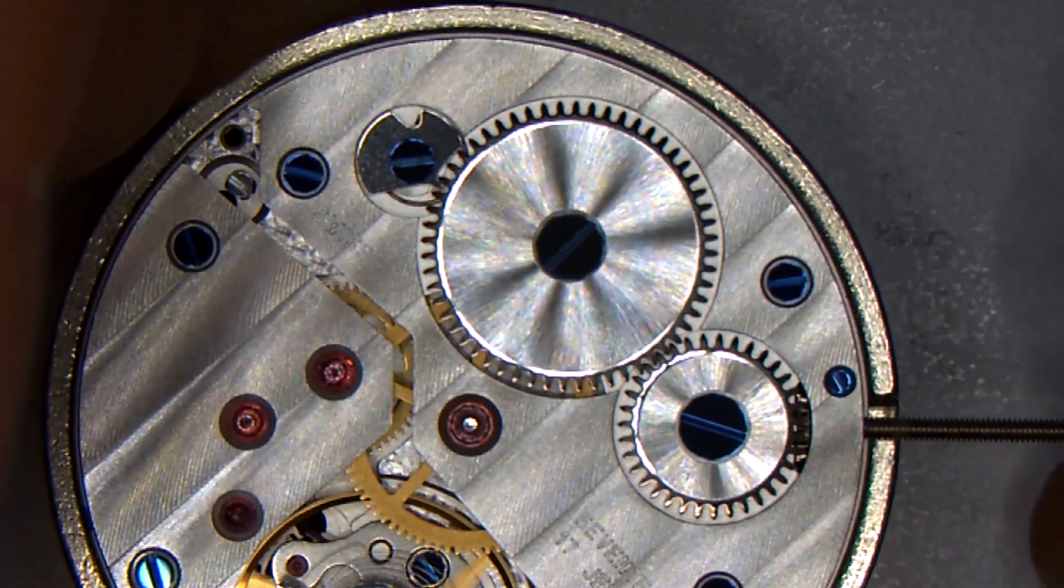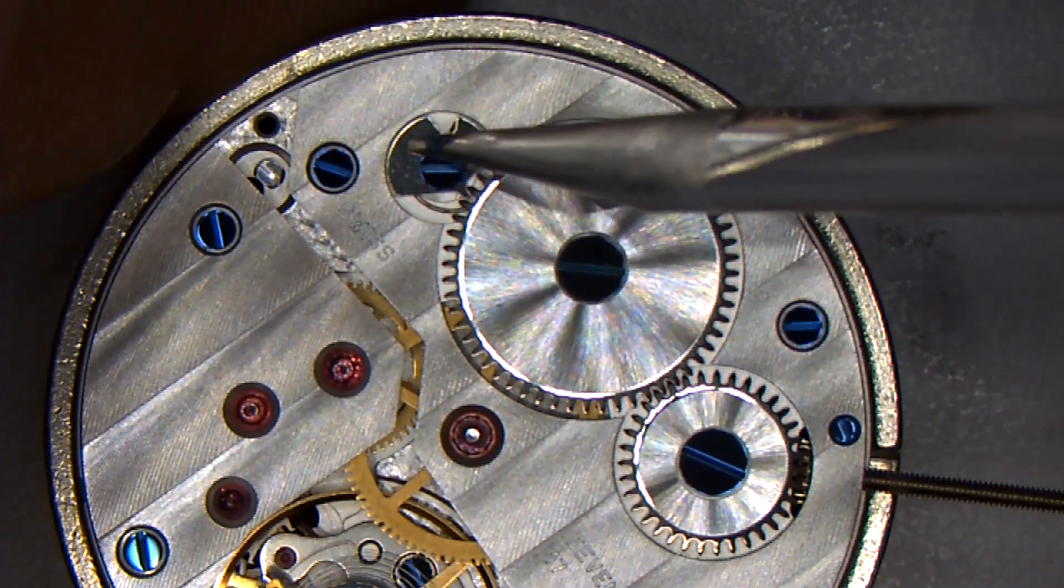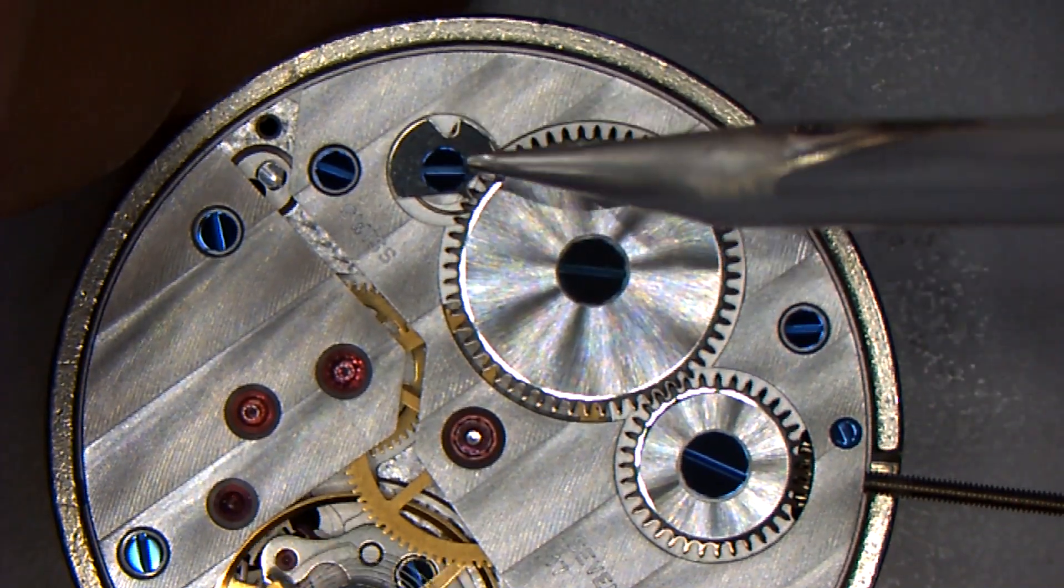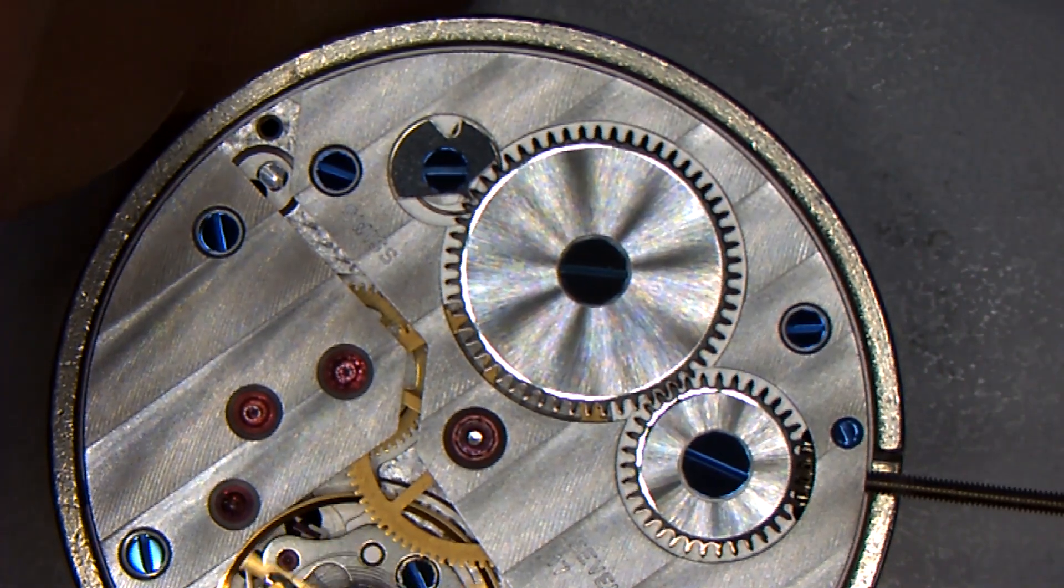So to let the power down, what I recognize I need to do is cause this click to rotate in a counterclockwise direction, and that's going to disengage this beak with the teeth and allow it to unwind.